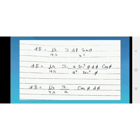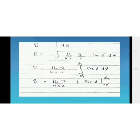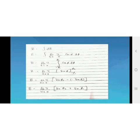Now we integrate dB to get the total magnetic field. B = ∫ dB, with lower limit −φ₁ and upper limit φ₂. Taking μ₀I/4πA as constant outside the integral, we integrate cos φ, which gives sin φ. Applying the limits: B = μ₀I/4πA · [sin φ₂ − sin(−φ₁)] = μ₀I/4πA · (sin φ₂ + sin φ₁).